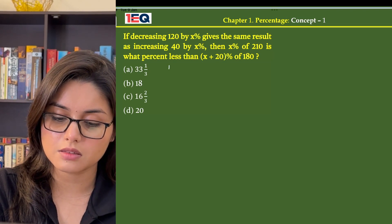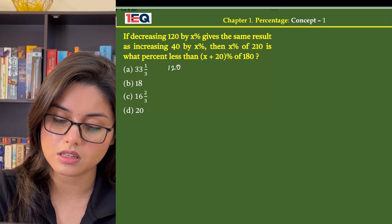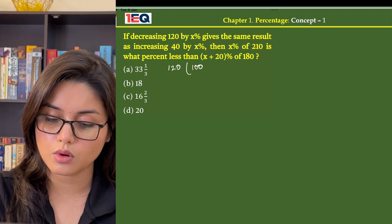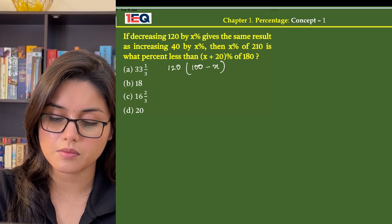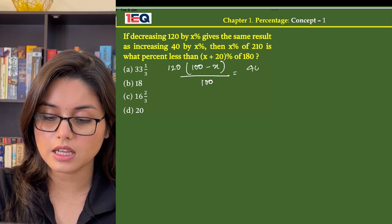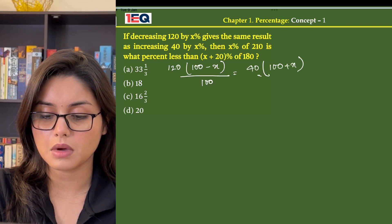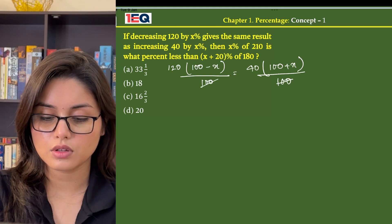if 120 has been decreased by x percent, that means 120 × (100-x)/100 will be equal to 40 increased, so 40 × (100+x)/100. Zero gets cancelled,